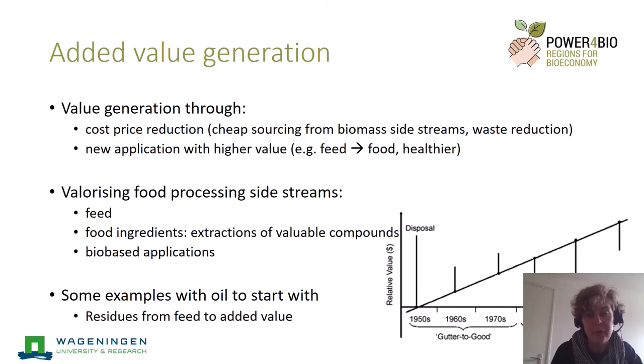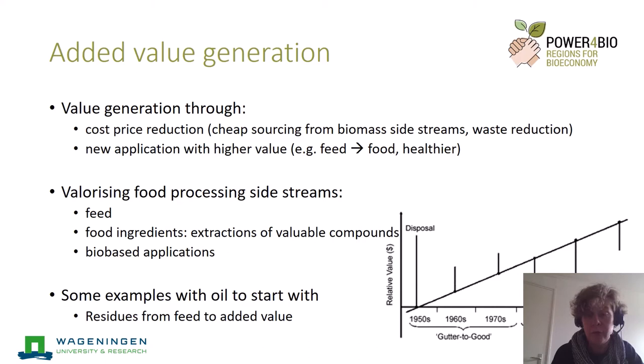So how can you add value to your process? In general, there are two routes to do this. You can try to reduce the cost price, which can be done by cheaper sourcing of biomass, for instance from side streams like agricultural side streams or food residues. An additional advantage is the reduction of waste.